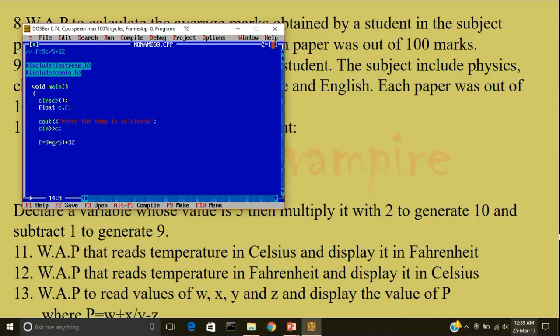F is equal to 9 star c by 5 plus 32. Parentheses are used to give priority to the part of expression. First, 9 multiplied with c by 5 will be solved, then the entire expression.